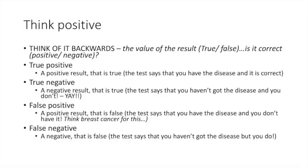With any test, the result you get back can be one of four things: a true positive, a true negative, a false positive, or a false negative. I like to think of it this way — the second value, positive or negative, is what the actual test result is, and then true or false is whether we believe it. So a true positive is a positive result that is true, and a true negative is a negative result that is true.